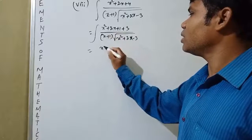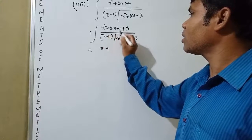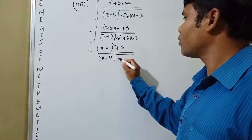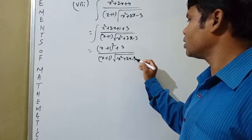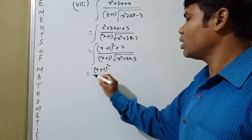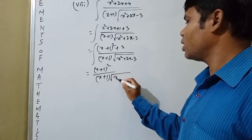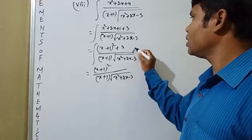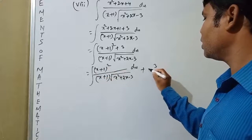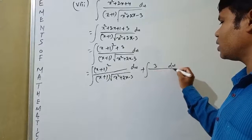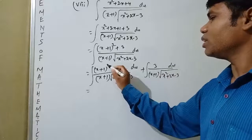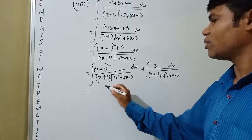This equals (x+1)² plus 3, divided by (x+1) times root over (x²+2x-3). Now we separate it into two parts: (x+1)² divided by (x+1) times root over (x²+2x-3) dx, plus the integration of 3 dx divided by (x+1) times root over (x²+2x-3).